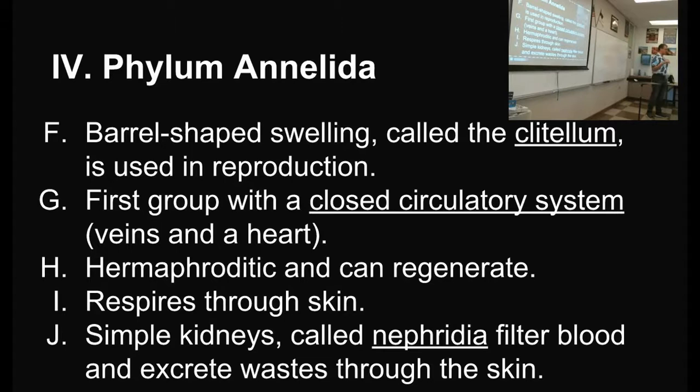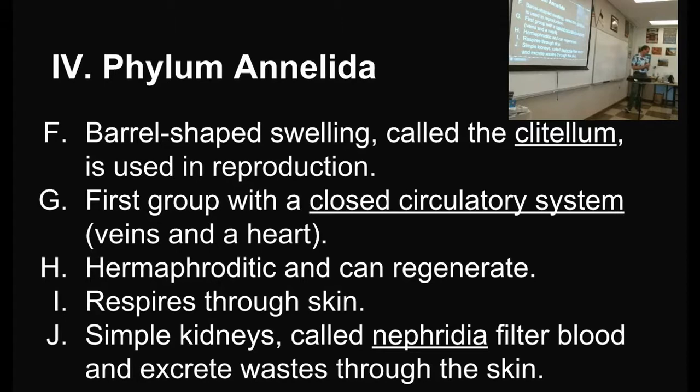This is the first group we've talked about with a closed circulatory system with veins going throughout the body and a heart. They're hermaphroditic and they can regenerate. If you cut an earthworm in half, both halves will grow the part that was cut off and you wind up with two earthworms — it does take time, but it essentially happens.